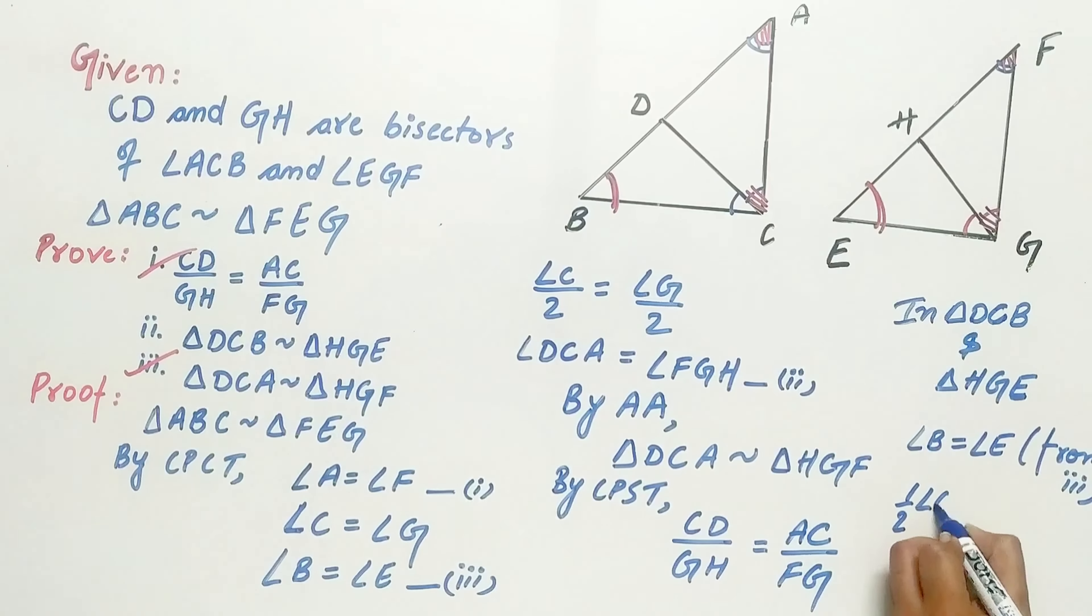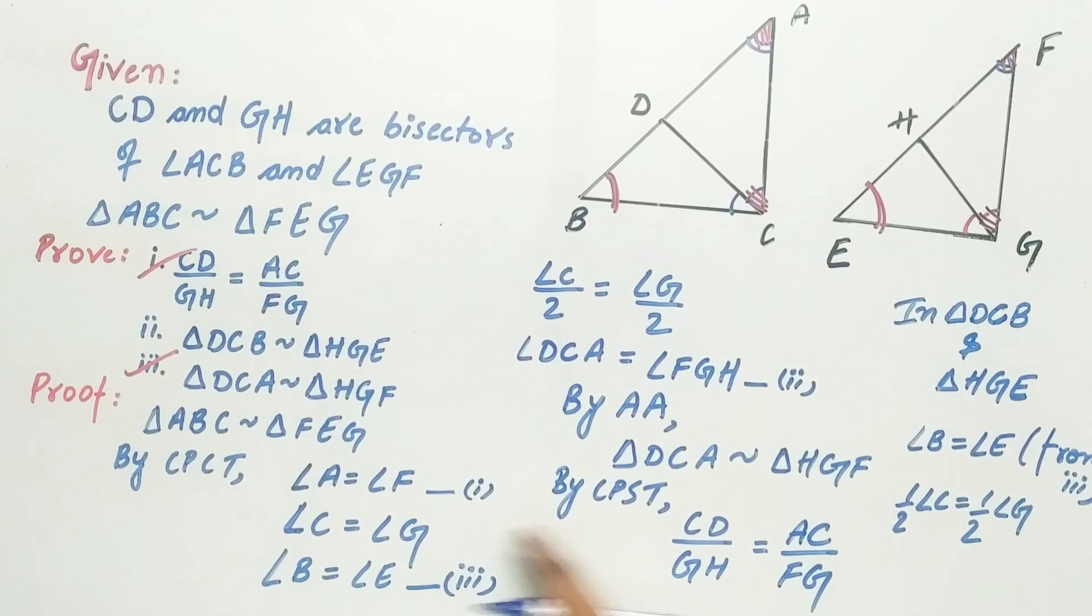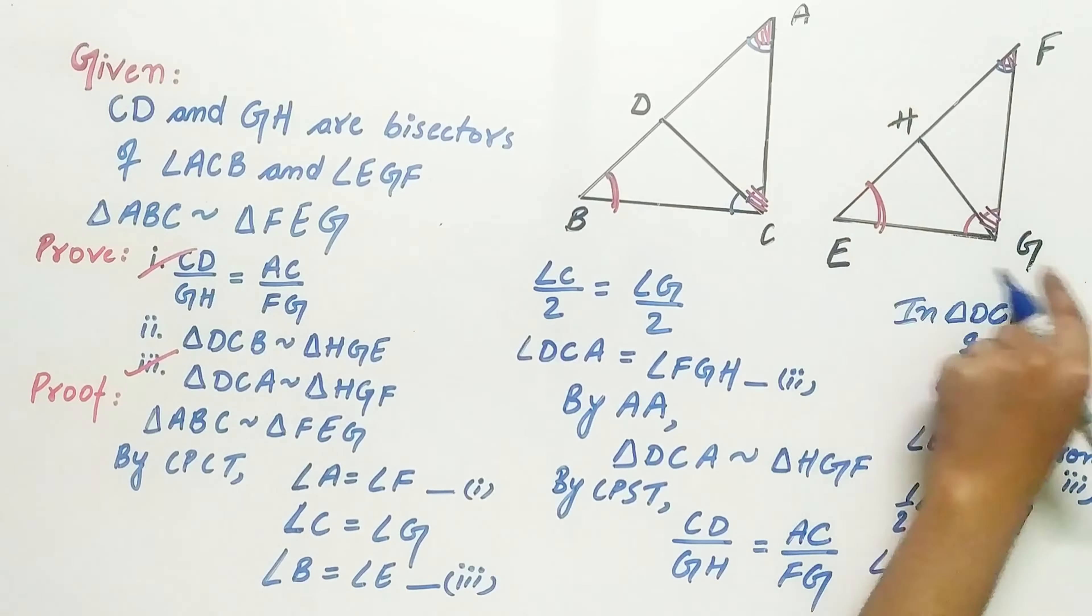Half of angle C is equal to half of angle G. Remember angle C is equal to angle G. Divide the entire equation by 2. Half of angle C is DCB, and half of angle G is HGE.